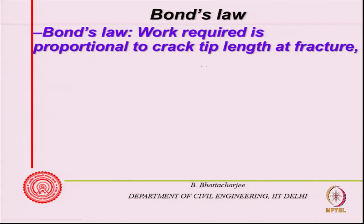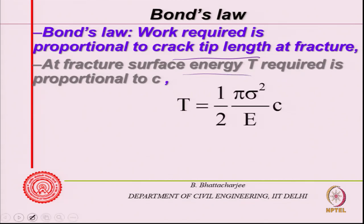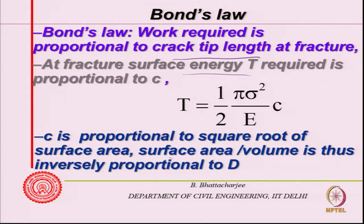As I was saying, work required is proportional to crack tip length at fracture. The fracture energy required is proportional to C. He takes T as half sigma squared - this we have already understood. C is proportional to the square root of surface area, and surface area per unit volume is thus inversely proportional to D.